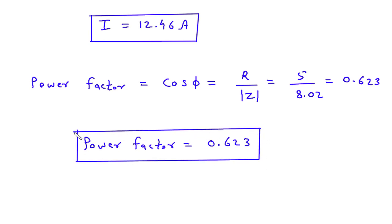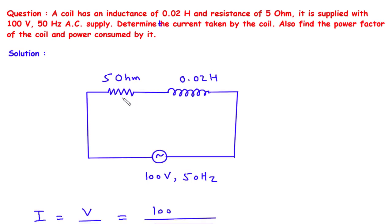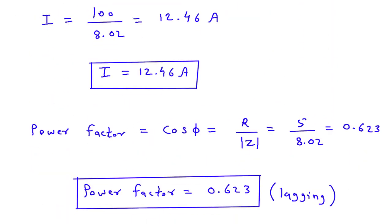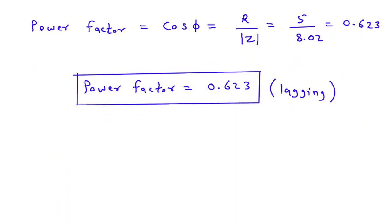One more thing to note: the power factor will be lagging, because here it is a combination of resistance and inductance. In the case of resistance, the voltage and current are in phase, but in the case of inductance, the current lags. Therefore, the power factor will be lagging.